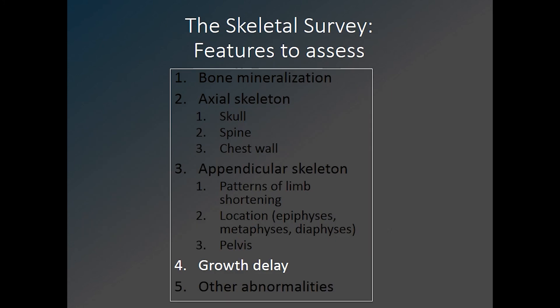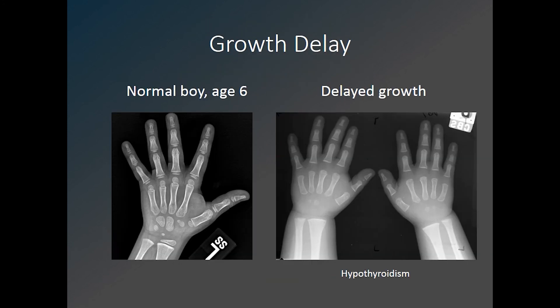Many skeletal dysplasias have aspects of delayed growth, and it may be helpful to calculate the bone age when interpreting a skeletal dysplasia. Here on the left is a normal 6-year-old hand. On the right is an example of growth delay — a 6-year-old boy with hypothyroidism. You can see that the carpal bones are delayed and there are no visible epiphyses.